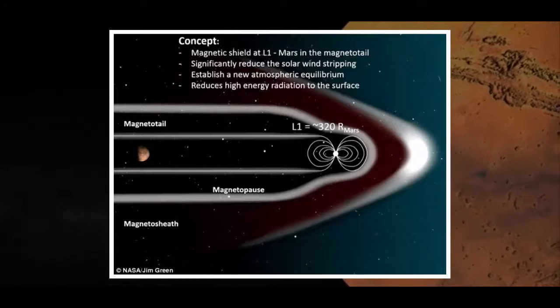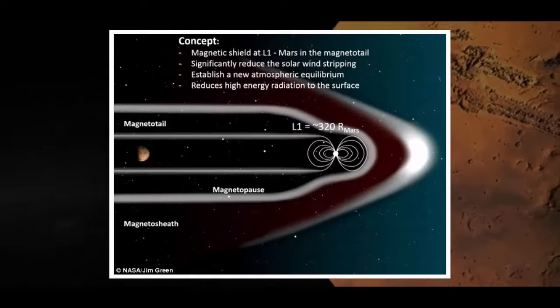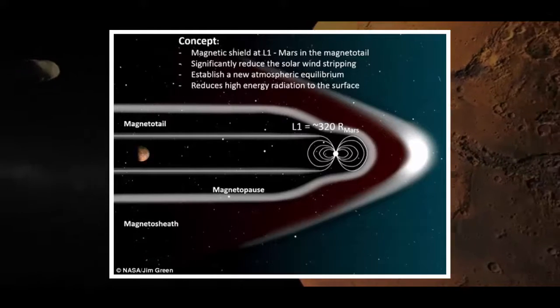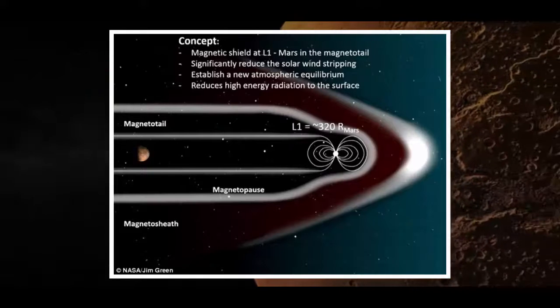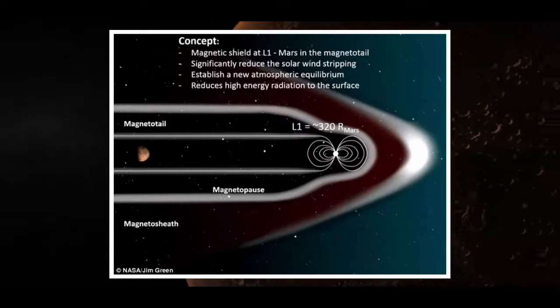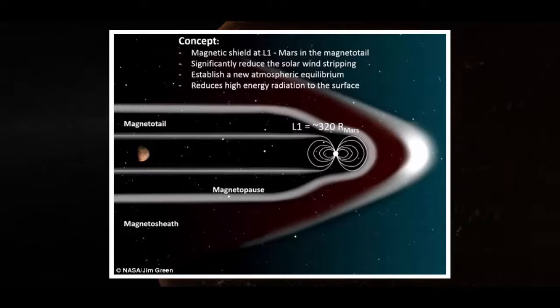The Planetary Science Division worked with scientists from Ames Research Center, the Goddard Space Flight Center, and a number of universities to run simulations of this scenario. The team found that a magnetic shield would allow Mars' atmosphere to find a new equilibrium.